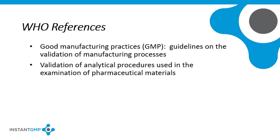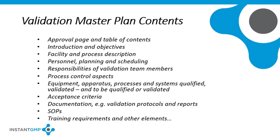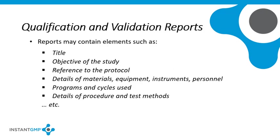The VMP should typically include at least the following sections: Approval Page, Table of Contents, Introduction and Objectives, Facility and Process Description, Personnel Planning and Scheduling, Responsibilities of Committee Members, Process Control Aspects, Equipment, Apparatus, Process and Systems to be Validated, Acceptance Criteria, Documentation, SOPs, and Training Requirements.